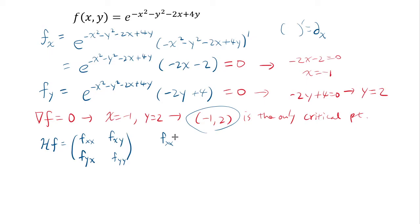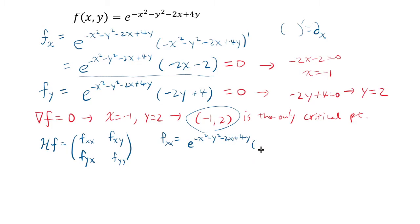To get fxx, we take fx and differentiate by x again. Since both the exponential part and the factor (negative 2x minus 2) are functions of x, we use the product rule. Differentiating gives e to the (negative x squared minus y squared minus 2x plus 4y) times (negative 2x minus 2) squared, plus e to the same exponent times negative 2.